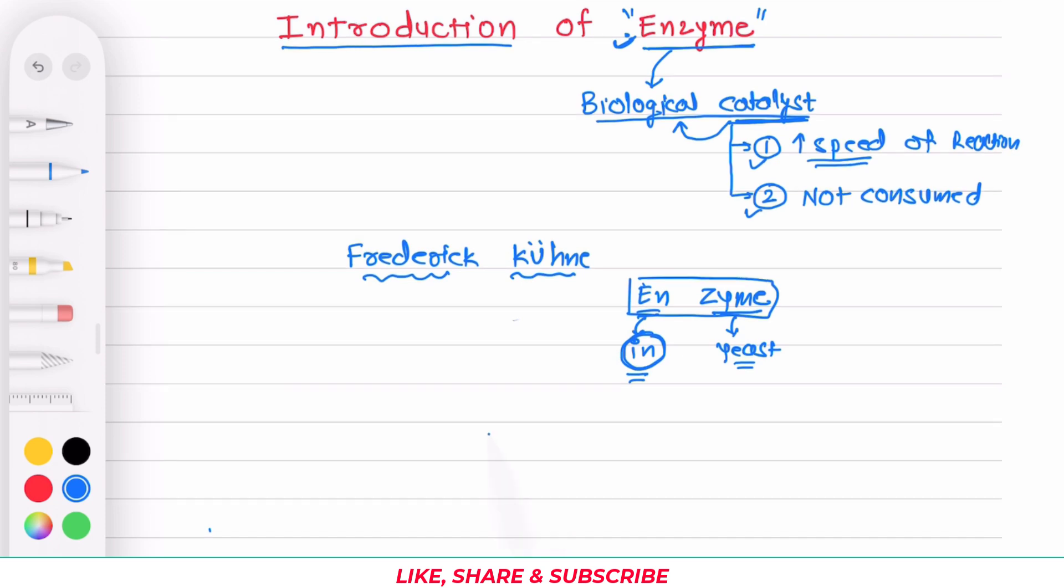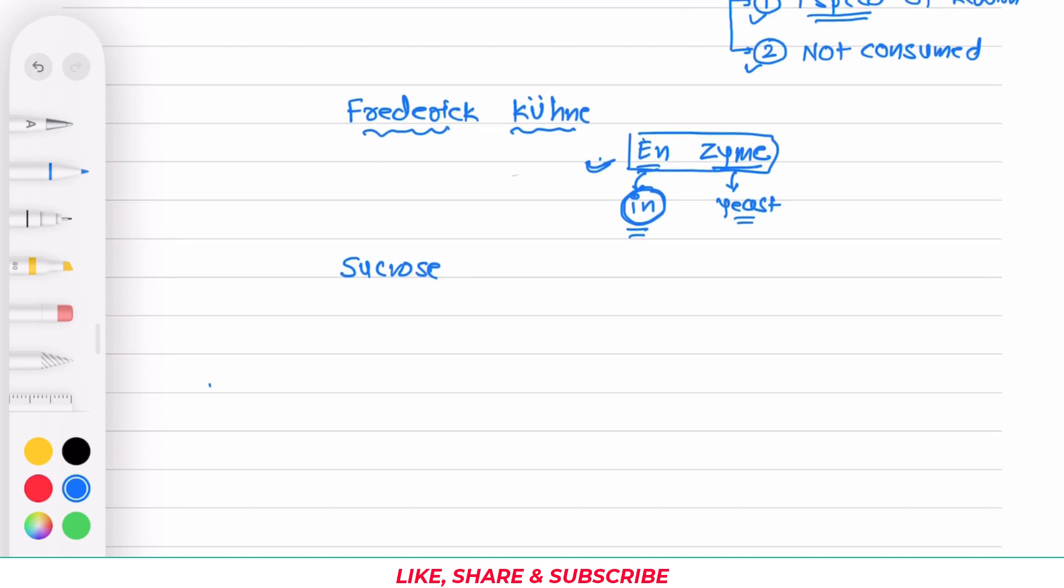Just to give an idea, let's see one example to appreciate how marvelous these molecules are. See this is one reaction, this is sucrose. Sucrose is the common table sugar that we use in our daily life. This sucrose by utilizing oxygen from the atmosphere it can get converted to carbon dioxide and water, and during this reaction huge amount of energy is getting released.